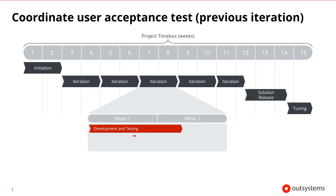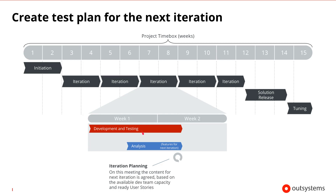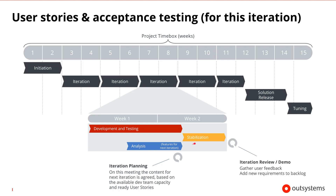During development and testing, the tester coordinates the user acceptance testing of the previous iteration. While doing analysis, the tester creates the test plan for the next iteration, based on the user stories and their acceptance criteria. During stabilization, the tester makes sure that the user stories of this iteration match their acceptance criteria, and then selects the user stories that are ready for the actual user acceptance testing.